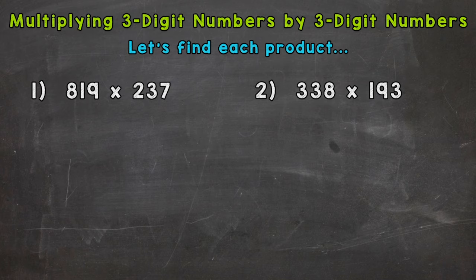Let's find the product of each. When I say product, that means the answer to a multiplication problem. For number one we have 819 times 237.